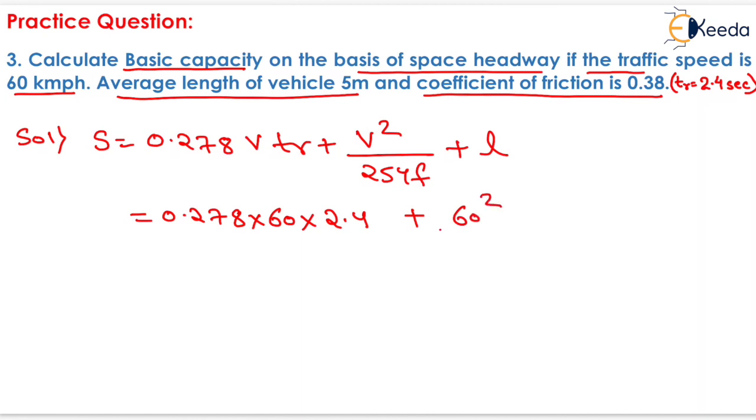We will write 60 square upon 254, and the coefficient of friction is 0.38 plus length of vehicle is 5 meters. On solving this, we will have the value as 82.329 meters. That will be the value of S.